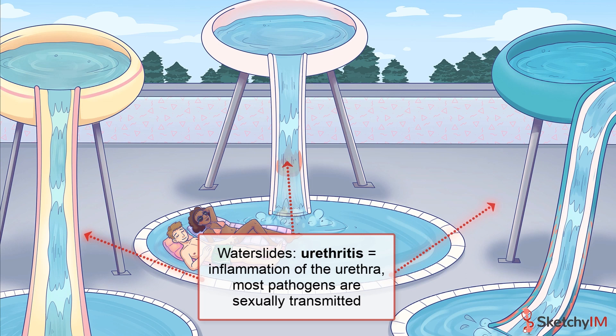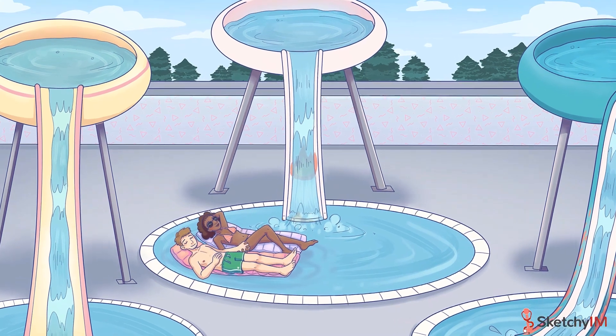We'll divide up the etiologies of urethritis into gonococcal versus non-gonococcal in origin. Both gonococcal and non-gonococcal urethritis share many similar characteristics, but there are some distinguishing differences between the two. The water slide on the left will show features of gonococcal urethritis, the one on the right will show features of non-gonococcal urethritis, and the one in the middle will have features shared by both.